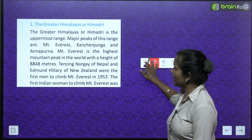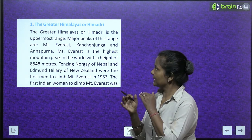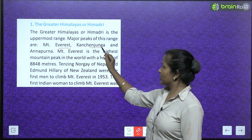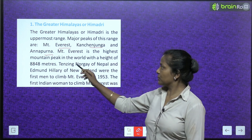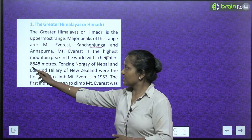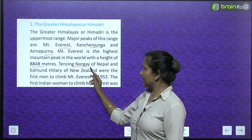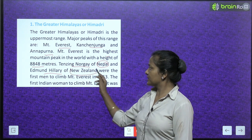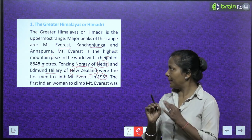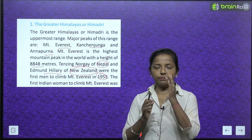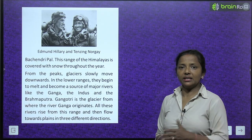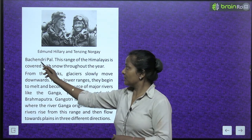The Greater Himalayas, or Himadri, is the uppermost range. Its major peaks include Mount Everest, Kanchenjunga, and Annapurna. Mount Everest is the highest mountain peak in the world, with a height of 8,848 meters. Tenzing Norgay of Nepal and Edmund Hillary of New Zealand were the first men to climb Mount Everest in 1953. The first Indian woman to climb Mount Everest was Bachhendri Pal.